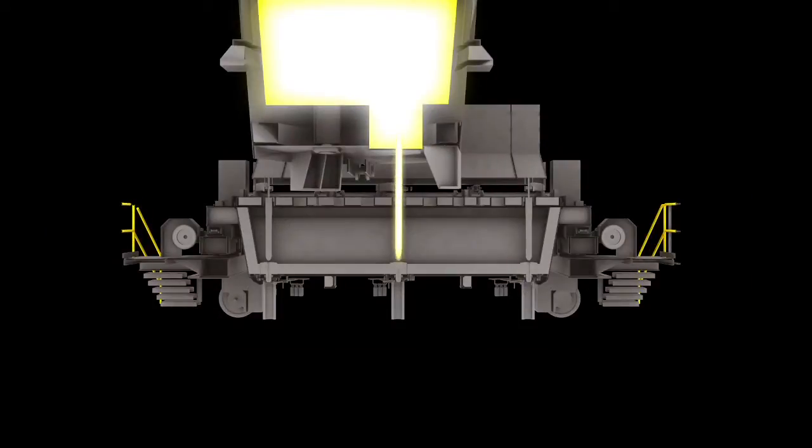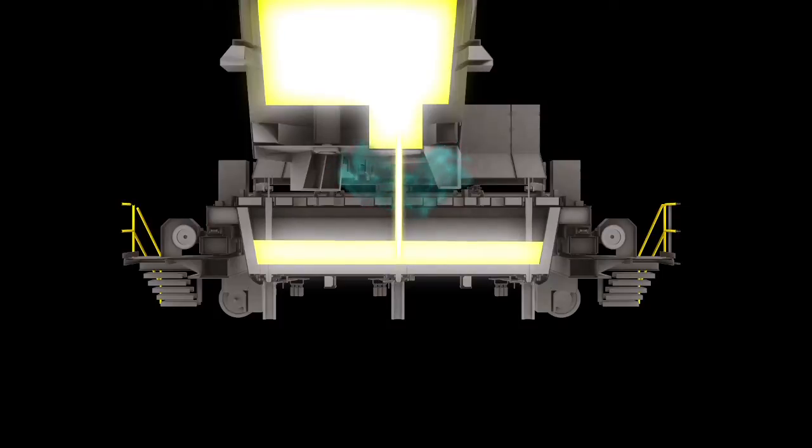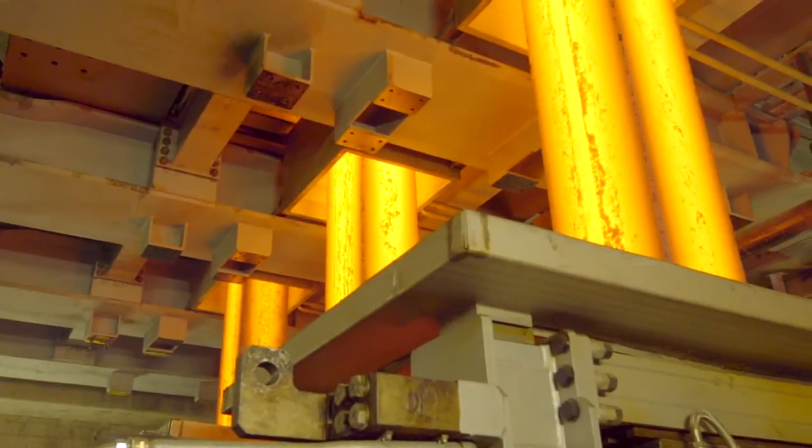From the ladle into the tundish, a physical shroud and inert gas protect the steel stream from oxidation. As steel flows through the tundish, a series of flow modifiers control the flow, allowing for optimum inclusion flotation and steel cleanness. The steel then exits the tundish to each of the three strands. We use refractory stopper rods to control flow from tundish to mold.